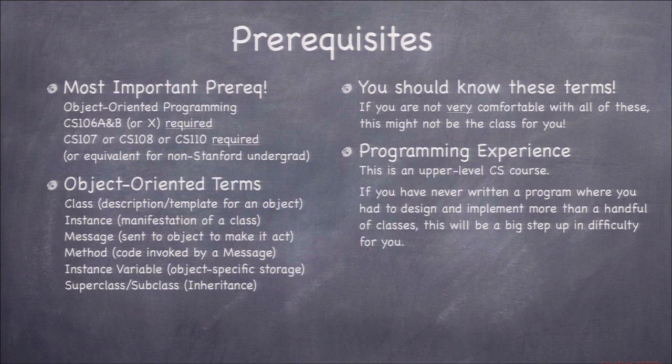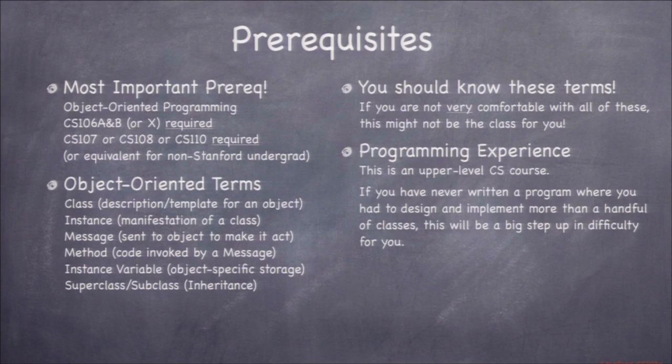Most importantly, you've got to really be comfortable with object-oriented programming. I put up terms like message, instance variable, superclass, and subclass. If you don't know these terms like the back of your hand, it's going to be hard for you in this class because I'm going to be throwing those terms out left, right, and center. iOS 7 is completely object-oriented — the whole structure of the design is object-oriented.